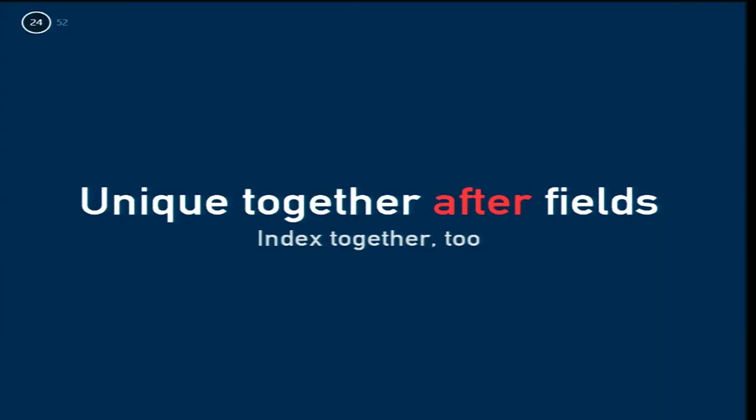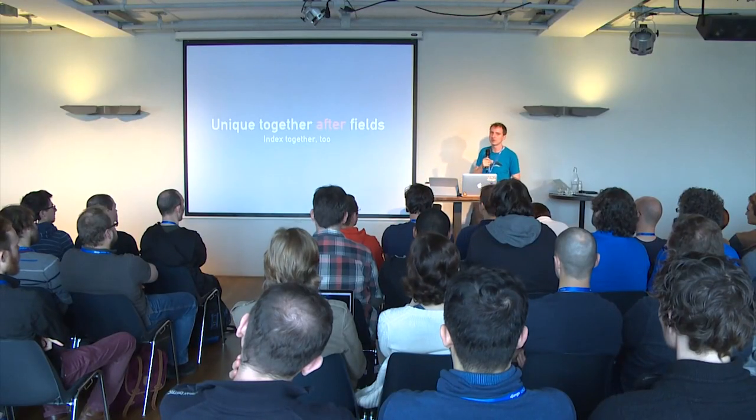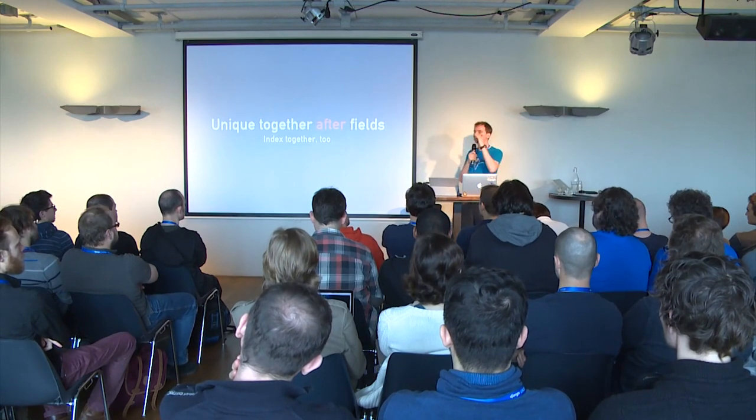Unique-together and index-together need to be put after the fields are made, because databases don't like it if you say 'make these fields that don't exist unique together.' This is one of the changes that happened midway through 1.7. Unique-together and index-together used to be nice separate operations by themselves, but it turns out that if you removed fields, added new ones, and changed unique-together, it blew up because it was removing old fields before changing together. You had to add the new fields, change unique-together, then remove the old fields in that order.